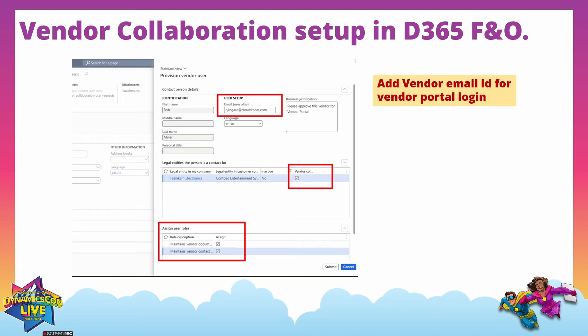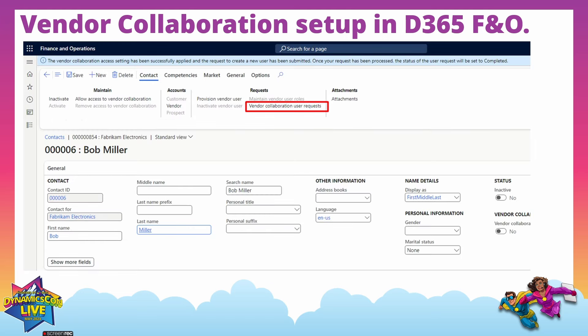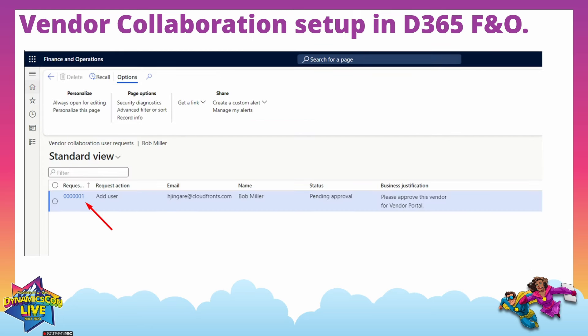After inserting all data and selecting the legal entity and user roles, we submit. Once submitted, the system automatically initiates the process of adding that email ID as a user in the system. In the Vendor Collaboration User Request section, you can see the status of the request. We also get a message that the vendor collaboration access setup has been successfully applied and the request for the new user has been submitted. The request is created with a request ID and the status shows as pending for approvals.